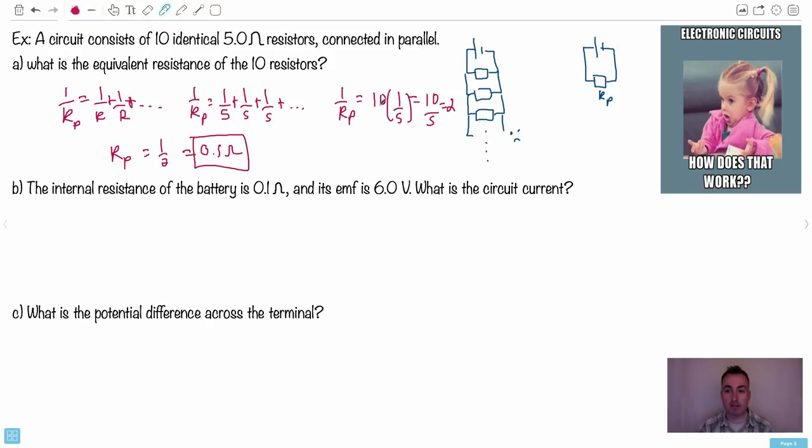This is my equivalent resistance. So now, this thing really acts as a 0.5 ohm resistor. I hope that made some sense. Now, we have an internal resistance. So what we've really got now, I can redraw this battery. I can redraw it as this thing, then a little internal resistor r, and then my one resistor now that is 0.5 ohms. This is a lot simpler to look at than this mess. So you have internal resistance of the battery, which is 0.1 ohms. And the EMF is 6 volts. That's epsilon here. Now, what is the circuit current?